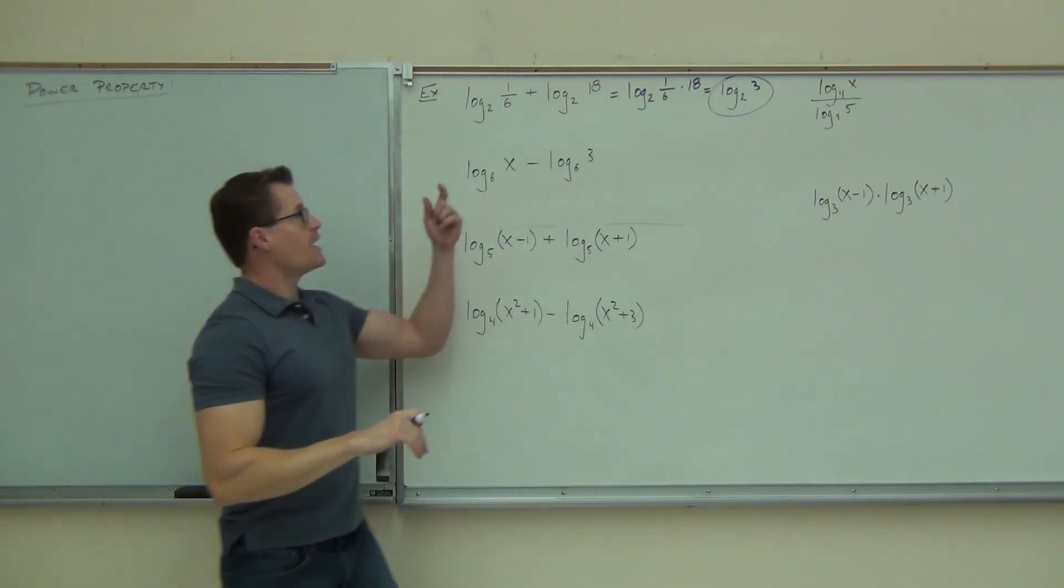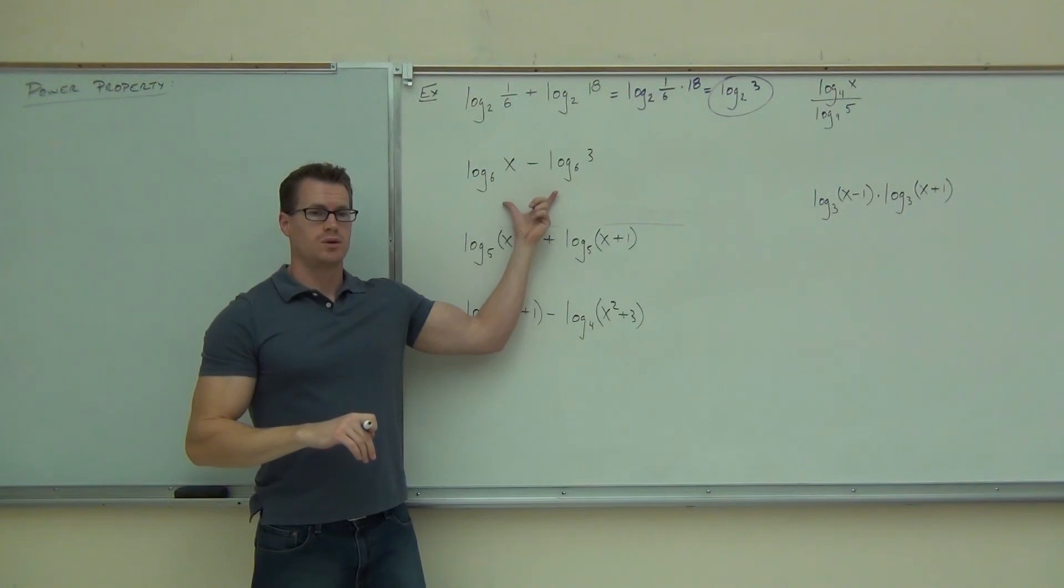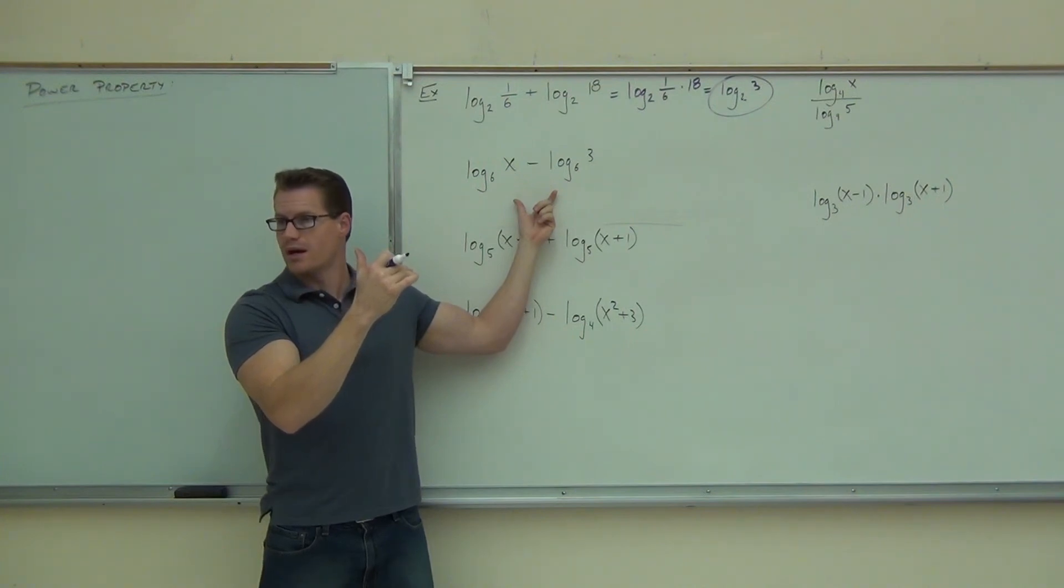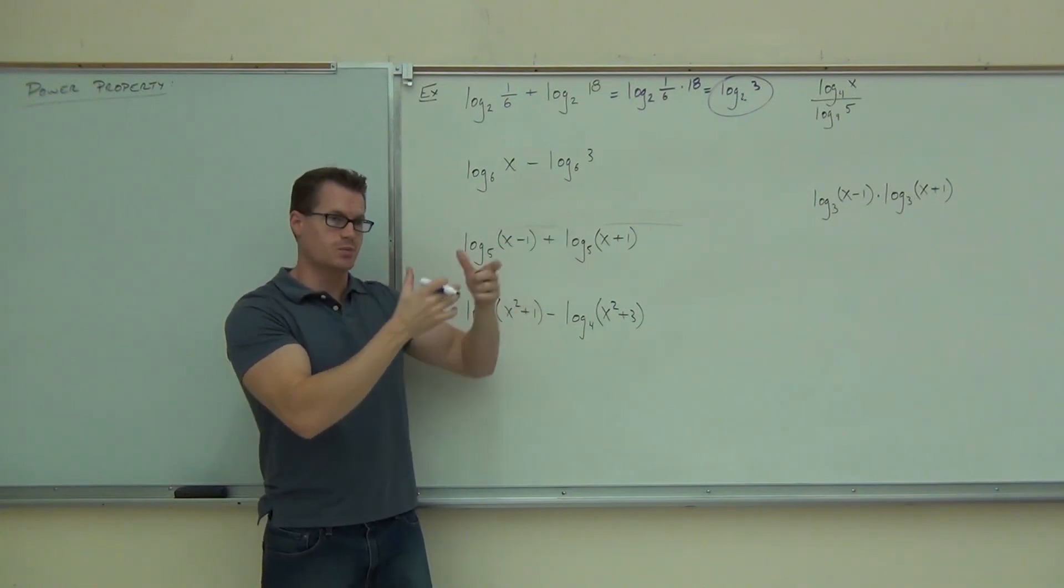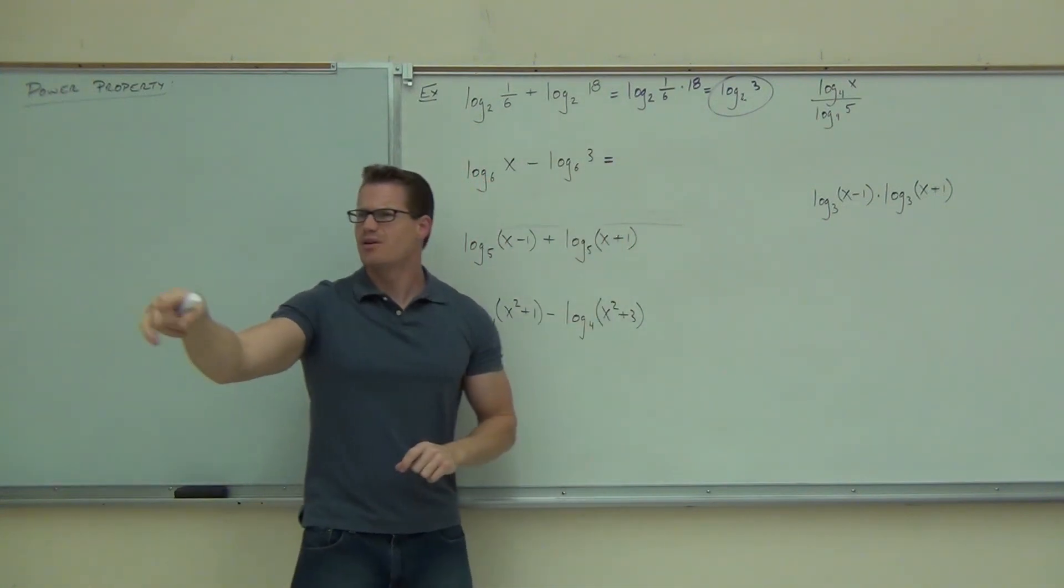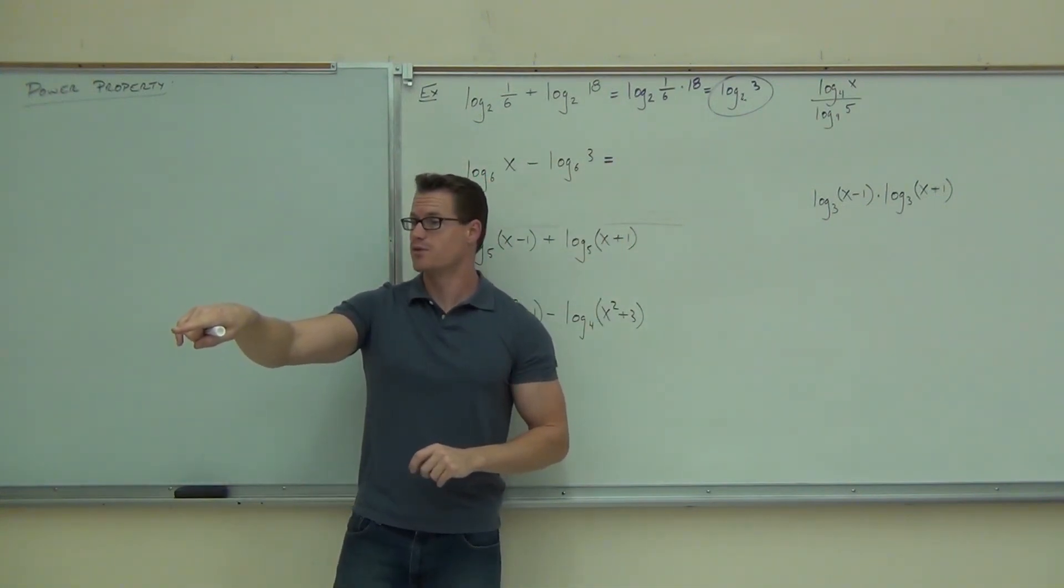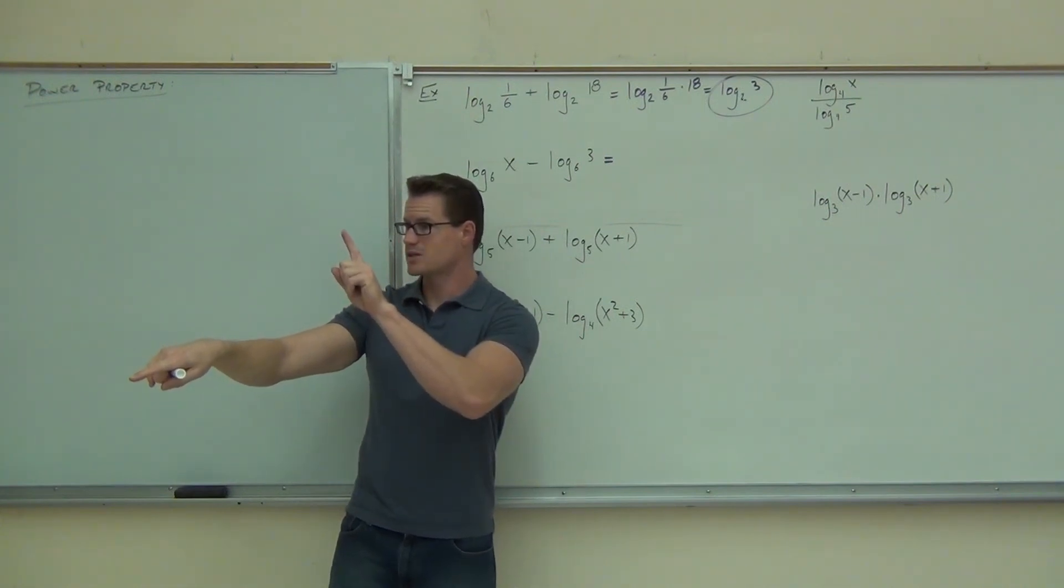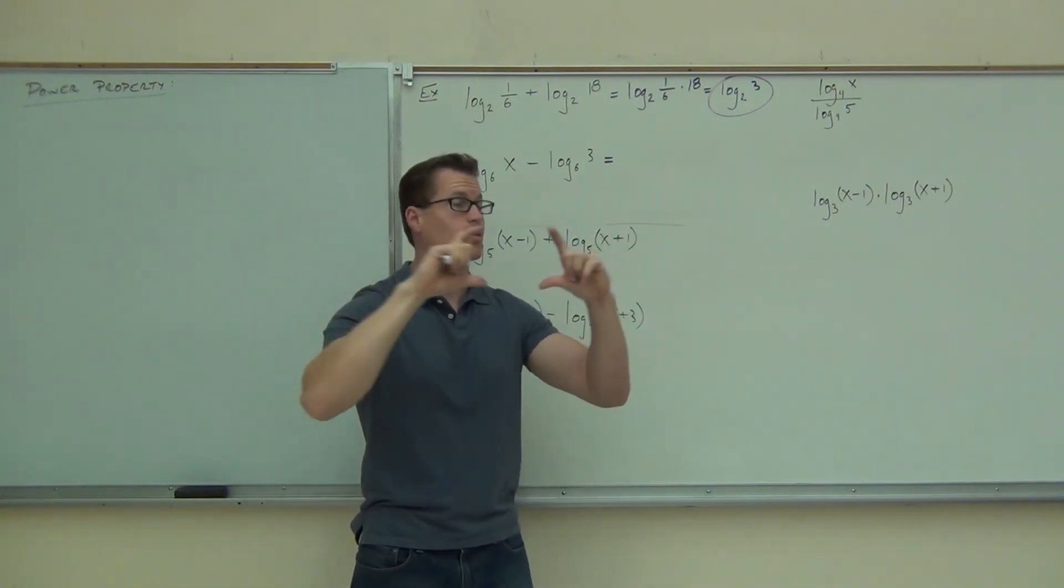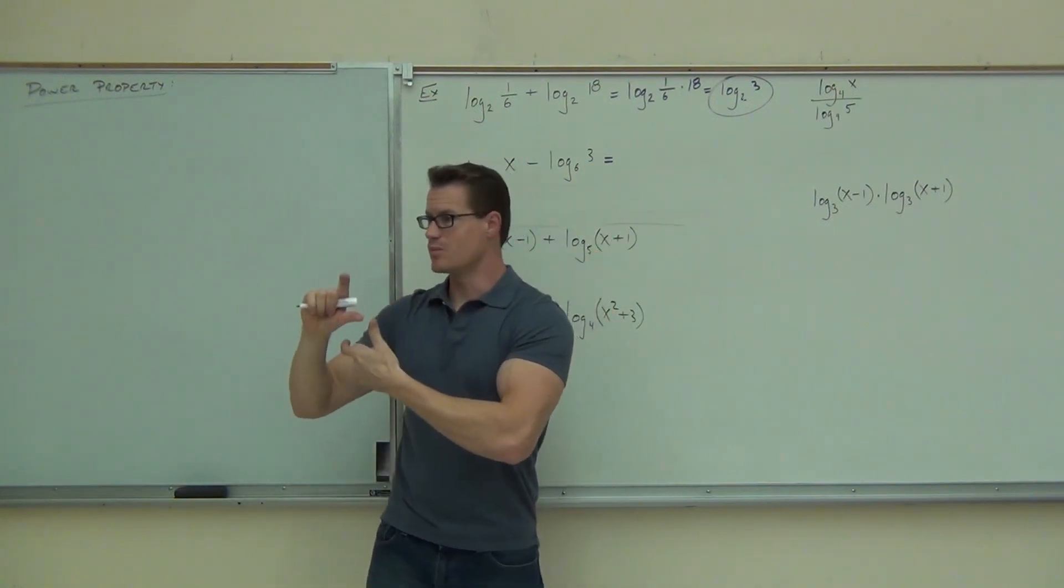Okay, next one. Can you combine these two? Yeah. It's got subtraction in there, right? That's good. That's part of our quotient property. We've got common bases. That's great. That means we can actually put these things together. Somewhere on the right hand side, how exactly would you write that? Log base what, first of all? Six. Are you going to have one log base six or two log base sixes? Remember, you're combining things. You're trying to change two logarithms into one logarithm.